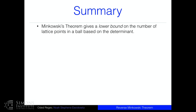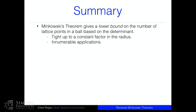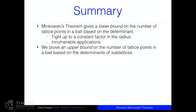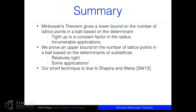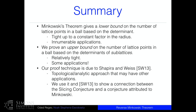To summarize: Minkowski gave us a lower bound on the number of lattice points in a ball based on the determinant, tight up to a constant factor in the radius, with innumerable applications. What we proved is an upper bound on the number of lattice points in a ball based on the determinant of sublattices — reasonably tight and with growing applications. Our proof technique, introduced to us by Uri Shapira and Barak Weiss, is a topological-analytic approach that should have many other applications — replacing the Gaussian mass with your favorite function on lattices.